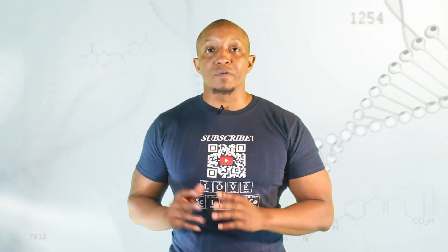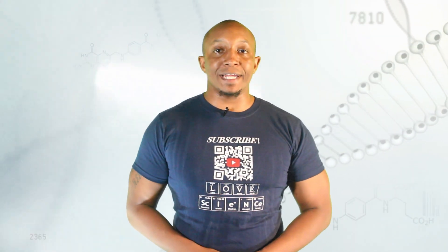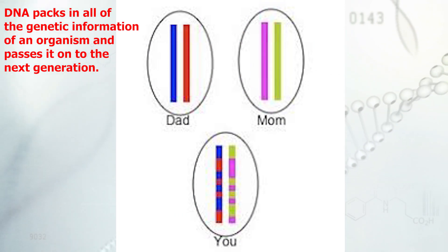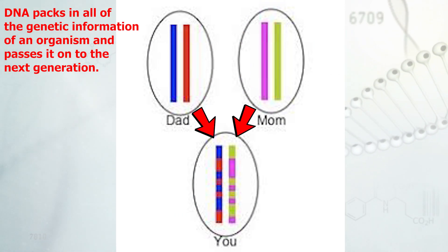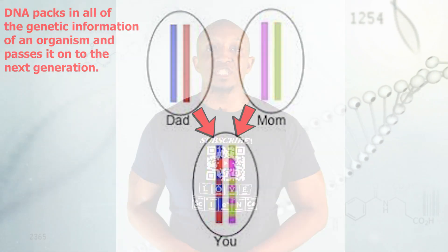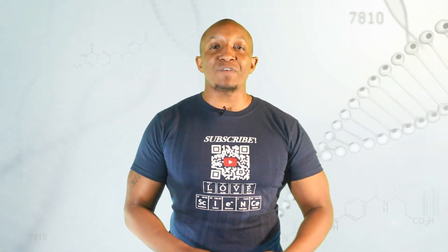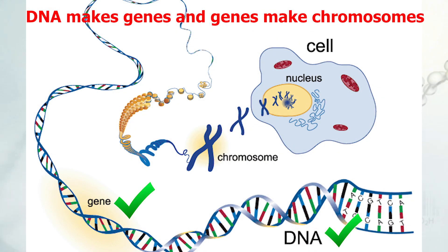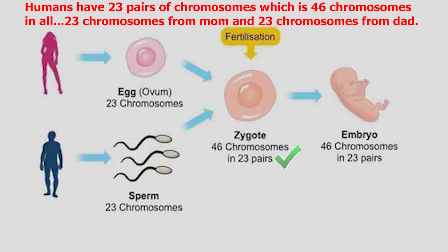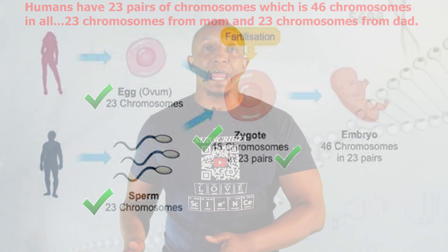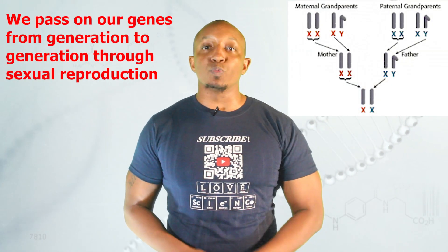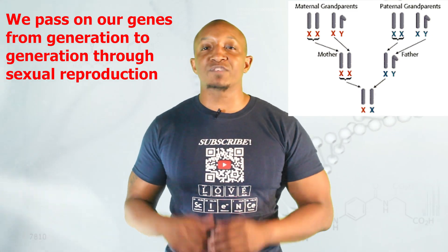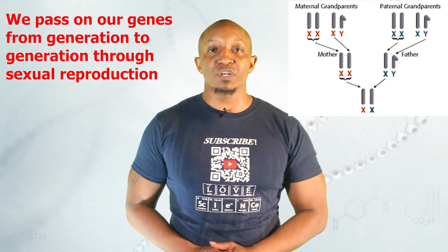Let's first start off by explaining the role of DNA in heredity. DNA packs in all of the genetic information of an organism and passes it on to the next generation. The basis for this lies in the fact that DNA makes genes and genes make chromosomes. Humans have 23 pairs of chromosomes, which is a total of 46 chromosomes in all — 23 from your mom and 23 from your dad. Through sexual reproduction, we are able to pass on our DNA or genes from one generation to the next.